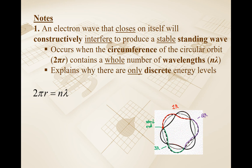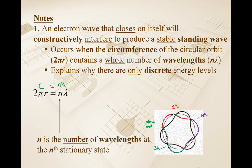To get a stable standing wave, your circumference 2πr must equal n times lambda. n represents the number of wavelengths at the nth stationary state. The diagram I showed had 3 wavelengths fitting over the circumference — so that illustration was the electron at the third stationary state.